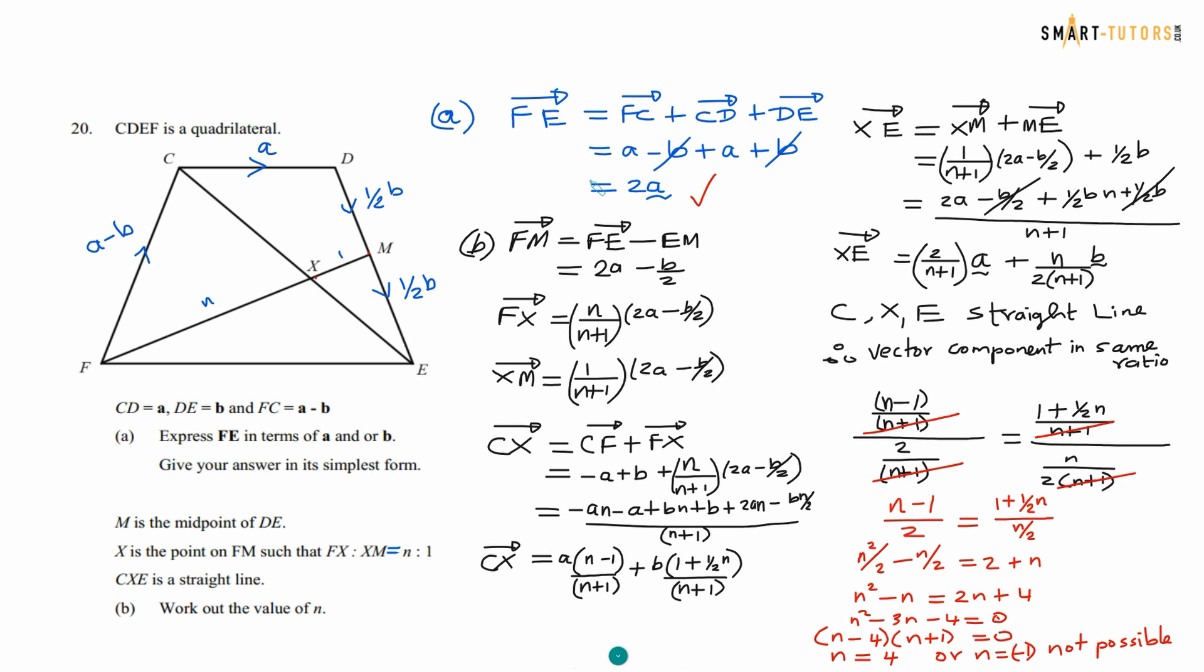And CXE is a straight line. So straight line means the theory says CXE is a straight line means the vector CX and the vector XE has the same vector component. In other words, their A vector and B vector has to be in a ratio. If three points are on a straight line means the two vectors has to be have the same vector component. That's the theory we are going to be using it. So FM. FM, we can say FE plus EM. FE is 2A minus B by 2 because ME is half B. If you are going against, it's minus B by 2. From there, you can find the FX. FX means N is 2, total N plus 1 times 2A minus B by 2. The algebra becomes a little bit hard, but the theory remains same. XM is going to be 1 over N plus 1 because N plus 1 is the total share, 2A minus B by 2.